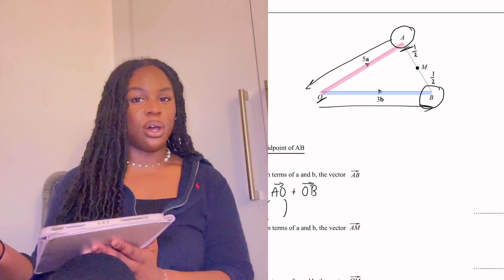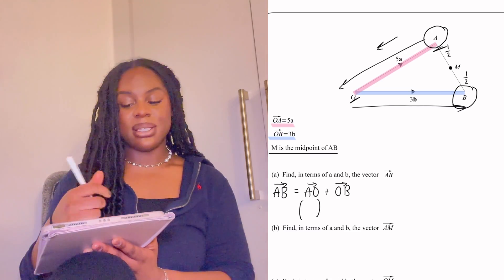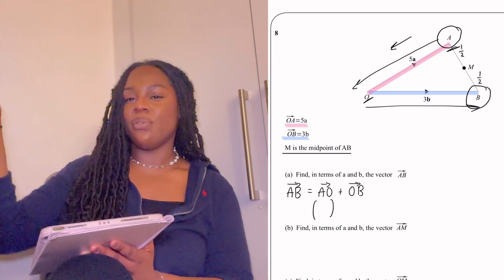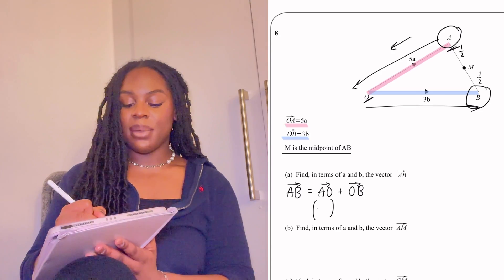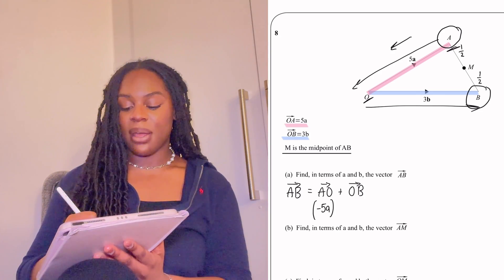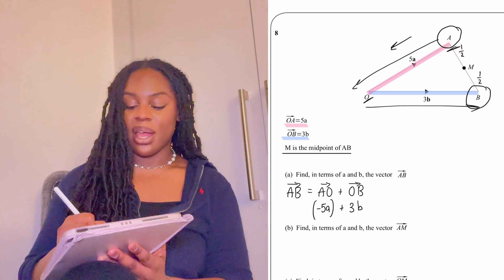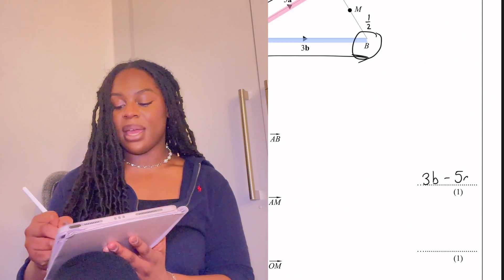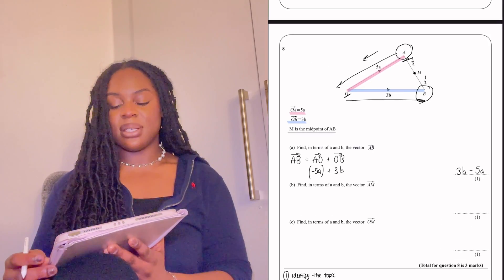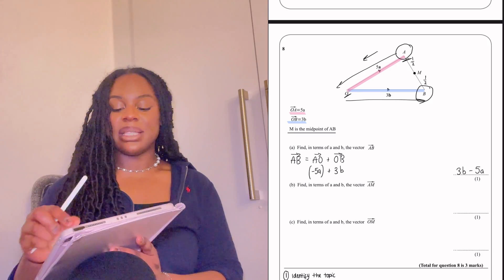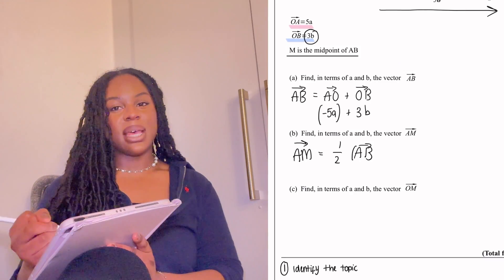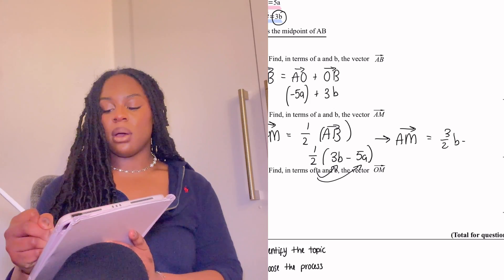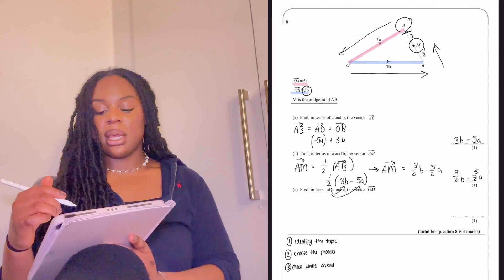We were given OA and OB in the question, but the problem is I don't have AO — I have OA. So I reverse it: going against the arrow in vectors gives the negative version. If OA is 5a, then AO is minus 5a. Vector OB we go with the arrow, so we just write it directly. Final answer for vector AB is 3b minus 5a. Part b asks to find vector AM. Since AM is half of AB, I just write a half times the bracket for AB. Expanding, the final answer for AM is three-over-two b minus five-over-two a.